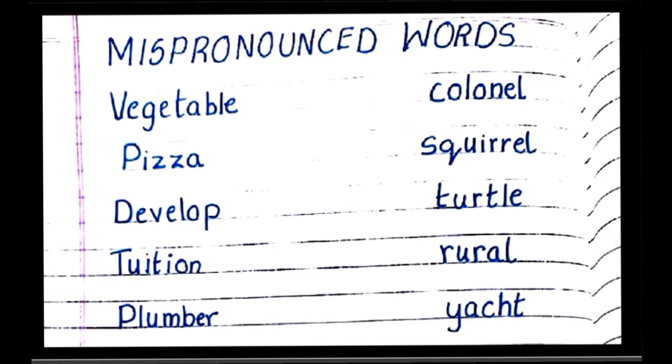First word is vegetable, vegetable. Second is pizza, pizza. Third, develop, develop. Don't say develop, say develop.